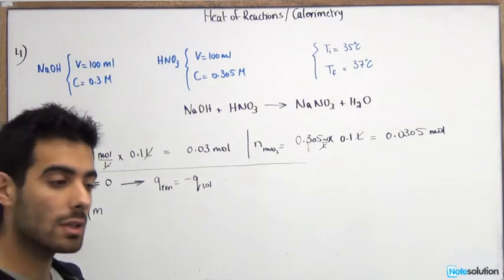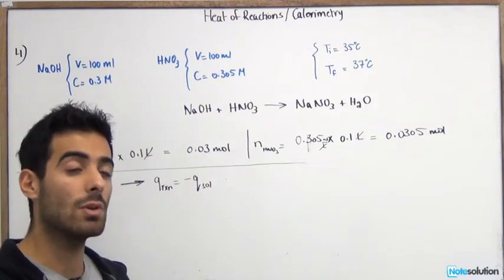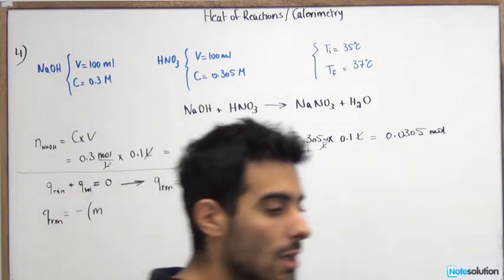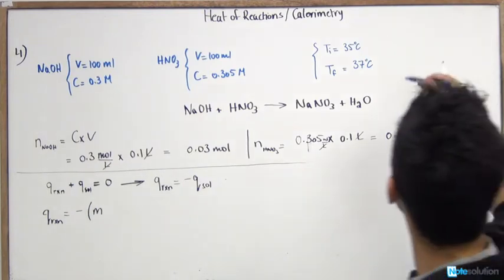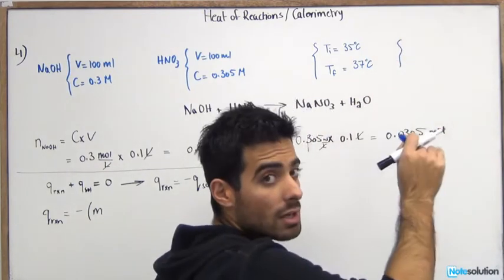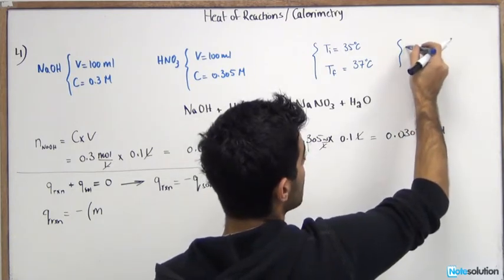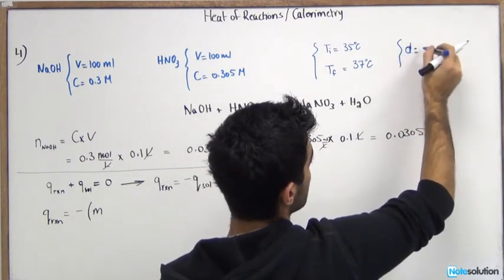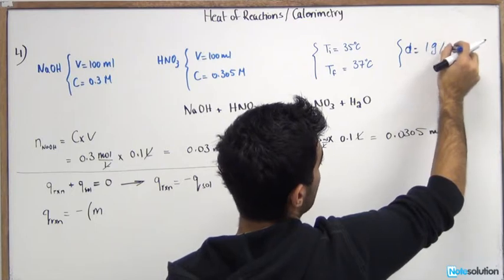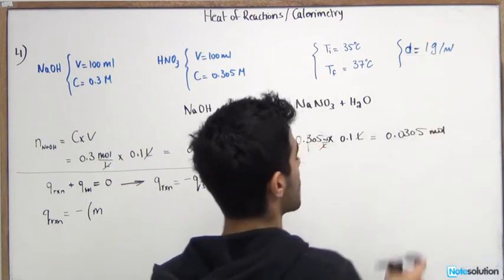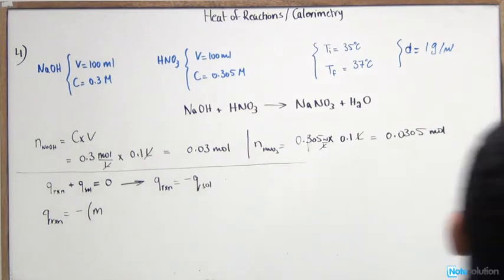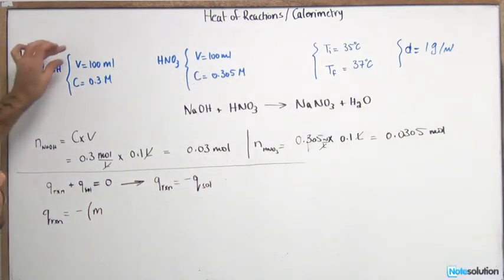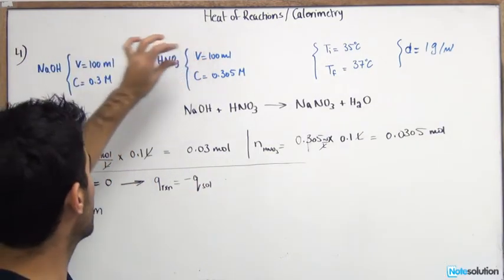You can consider the density of water to be one gram per milliliter. So when the density of water is not given to you, you usually consider it as density equals one gram per milliliter of water. So that's what you usually consider.